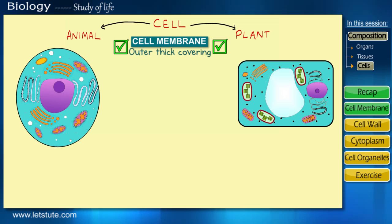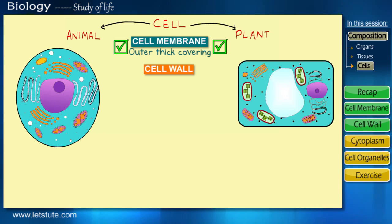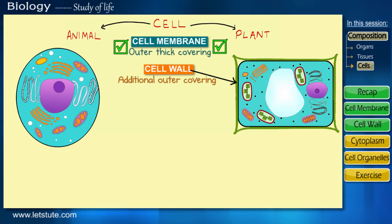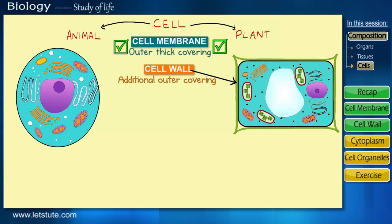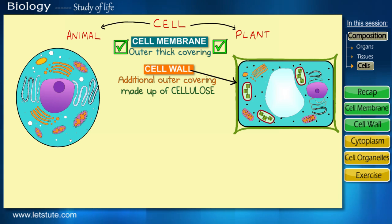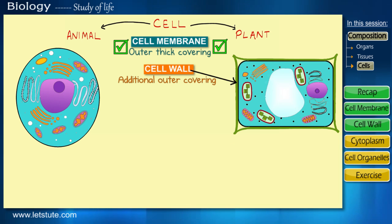Now coming to the second component — that is the cell wall. An animal cell and a plant cell differ from each other, and one of the differences is that a plant cell has an additional outer covering apart from the cell membrane, and this is called the cell wall. Taking the school example again, the cell wall acts as a fence which surrounds the school. This cell wall is composed of a protein named cellulose, which offers rigidity to the plant cell to sustain conditions like increase in temperature and strong winds. Please remember that this cell wall is present only in a plant cell.